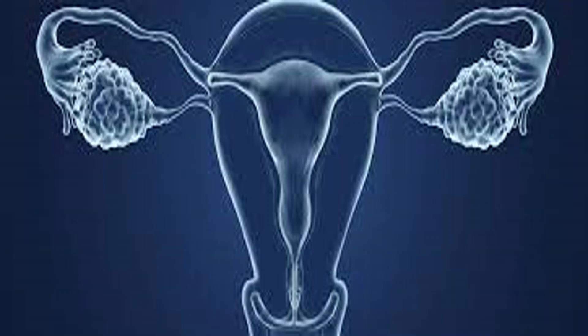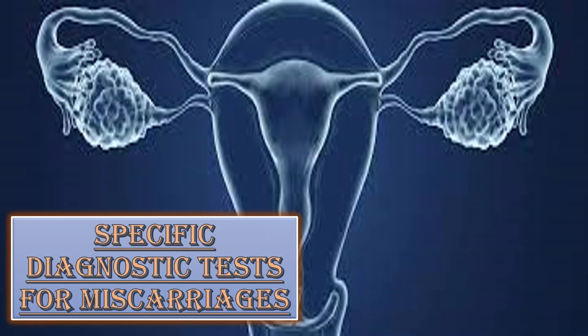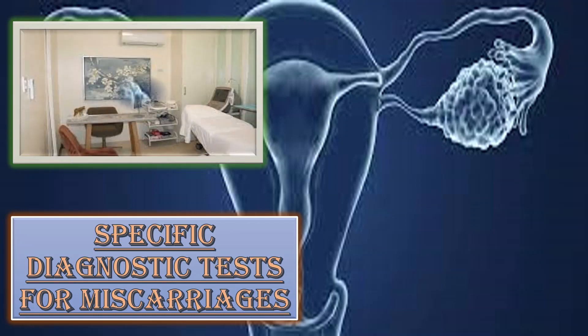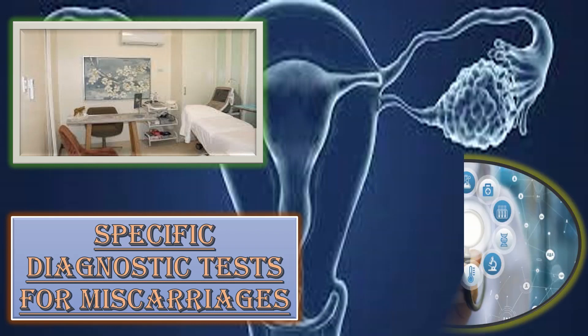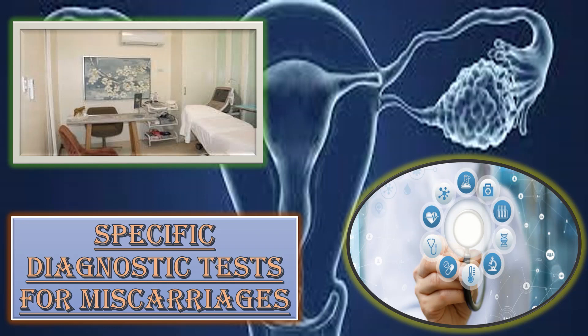Bismillahirrahmanirrahim. Today we will talk about the specific diagnostic tests for miscarriages. Ideally, the couple should be seen together at a dedicated recurrent miscarriage clinic and given accurate information to facilitate decision-making about future pregnancies. After compiling the accurate information, the next step is the investigation. There are certain diagnostic tests which we will discuss today.